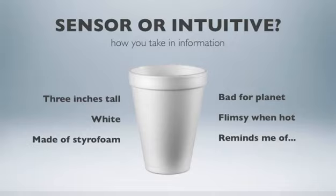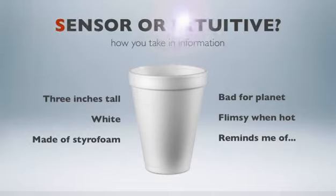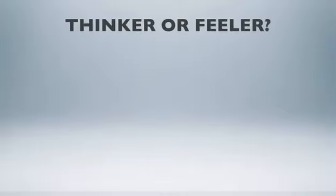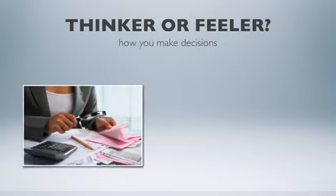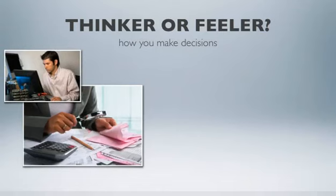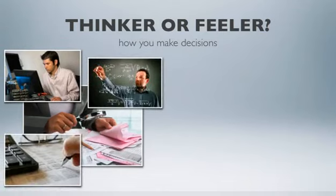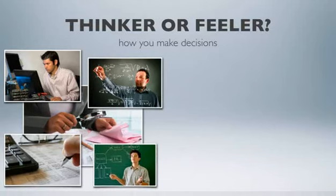Mark down your preference for S or N. The third facet, thinking-feeling, describes how you like to make decisions. Thinkers like to base their decisions on objective data and logical analysis. A thinker might ask: what are the pros and cons? What are the logical consequences? What is the most reasonable course of action?